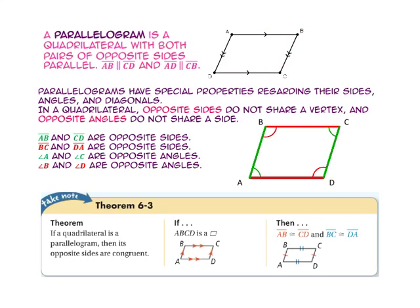Parallelograms have special properties regarding their sides, angles, and diagonals. In a quadrilateral, opposite sides do not share a vertex and opposite angles do not share a side. Side AB and side CD are opposite sides, and side BC and side DA are opposite sides. Angle A and angle C are opposite angles, and angle B and angle D are opposite angles.